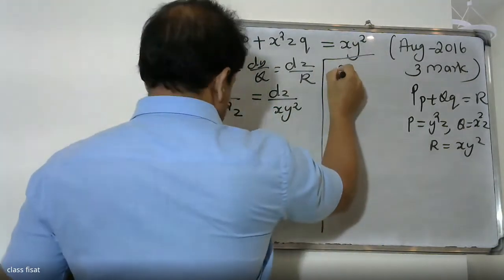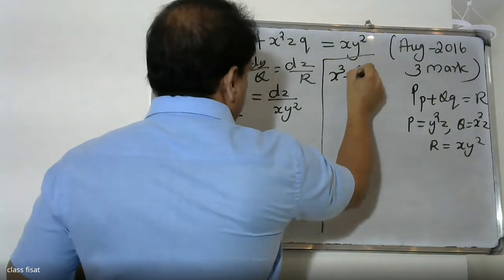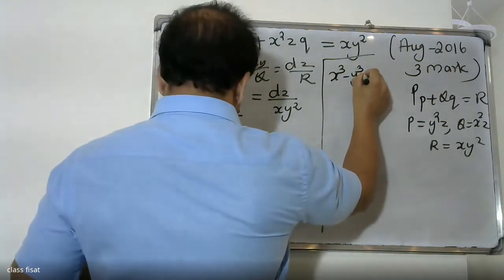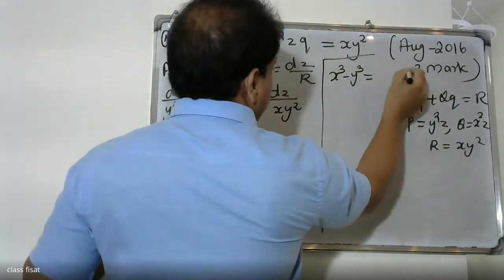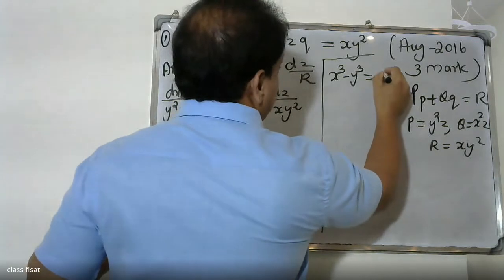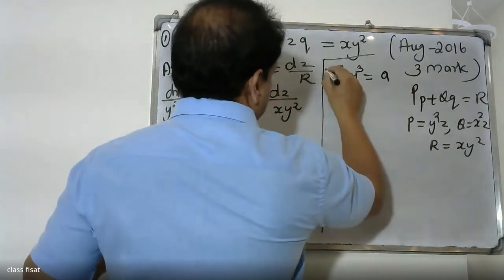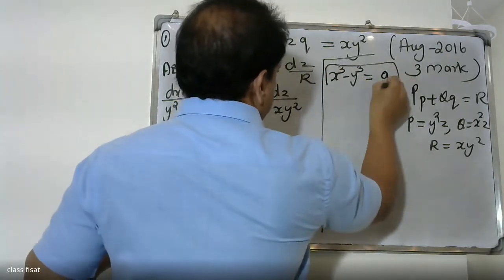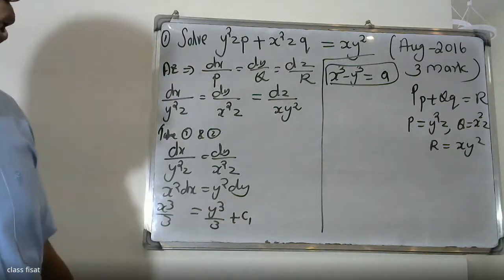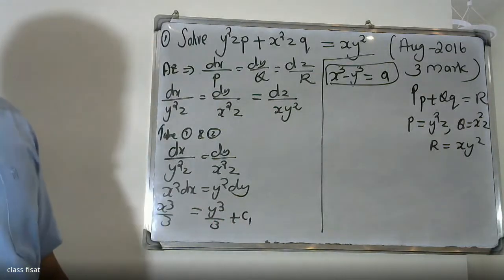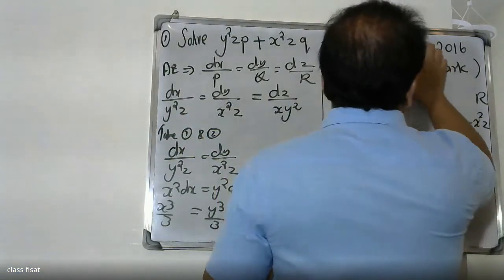x-squared minus y-squared is equal to 3C1, and therefore the first constant of integration gives us x-cubed minus y-cubed is equal to a constant.